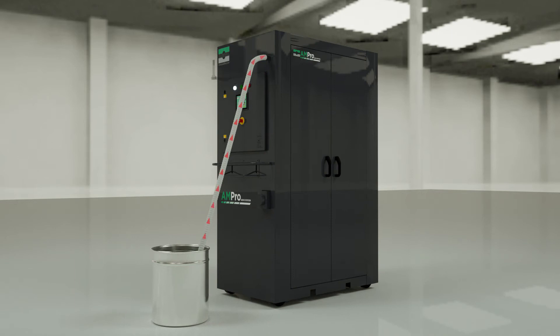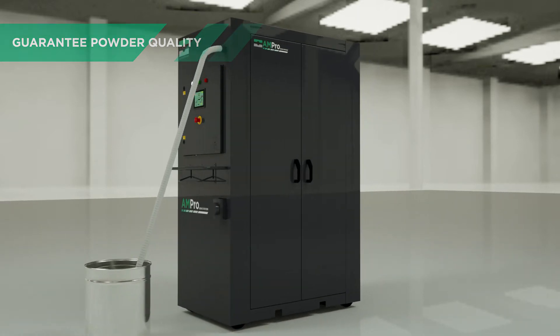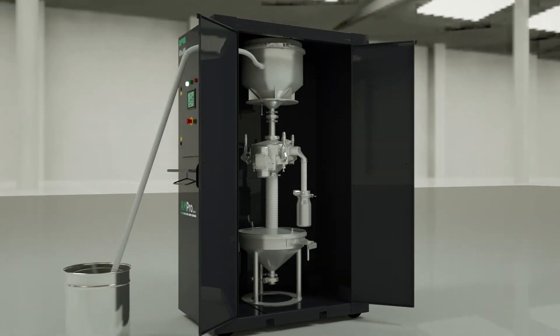Firstly, the Russell Ampro SIF station can be used to guarantee the quality of virgin powders before entering the production process, ensuring they are qualified before use.